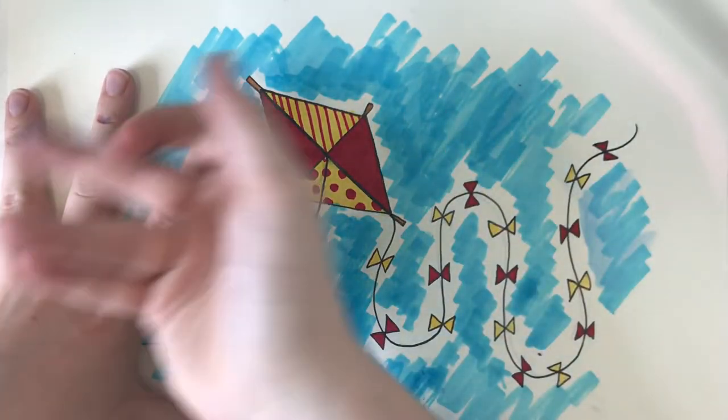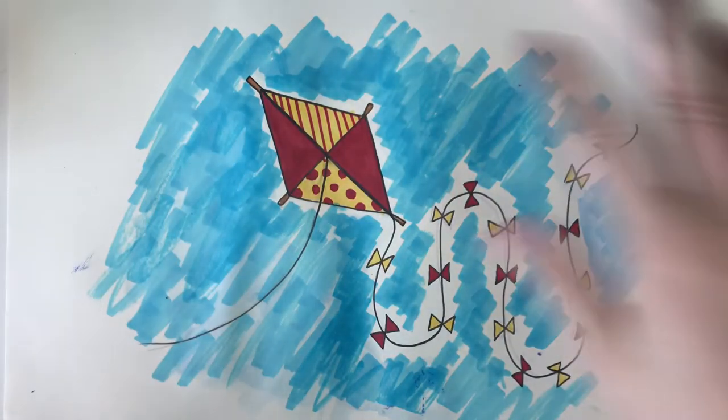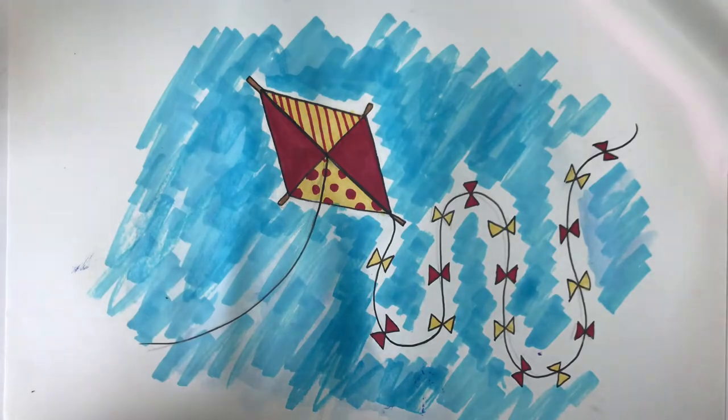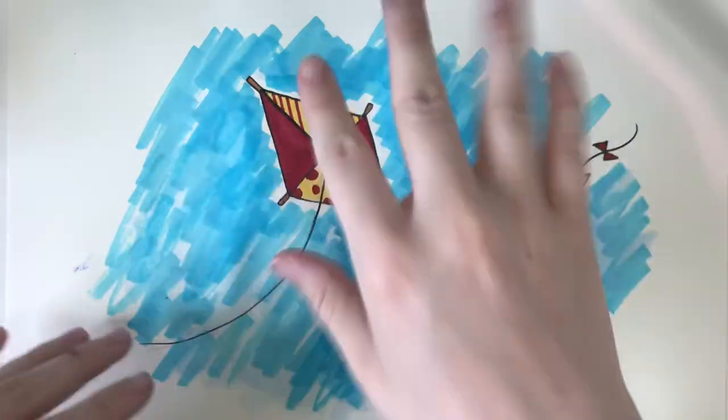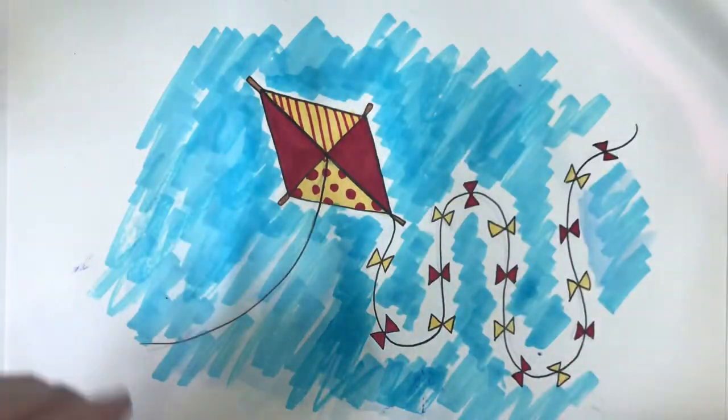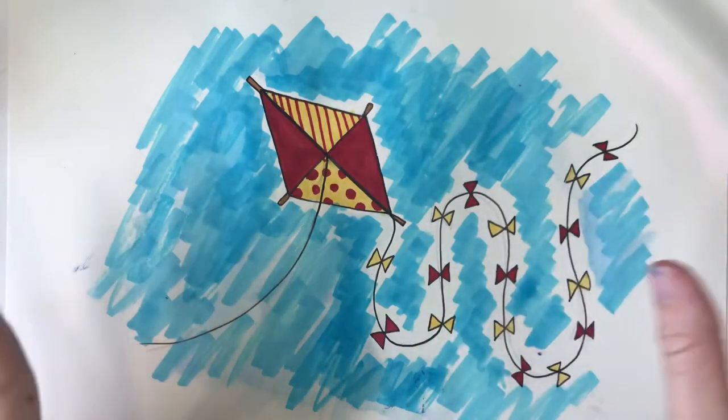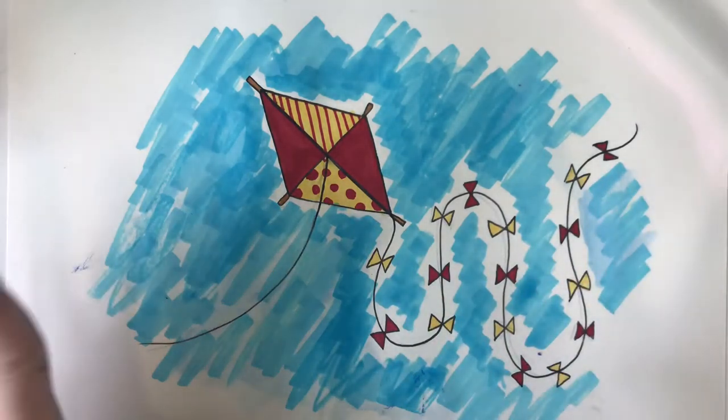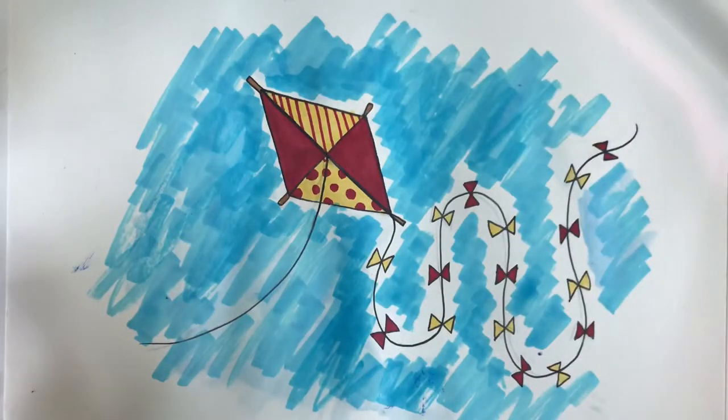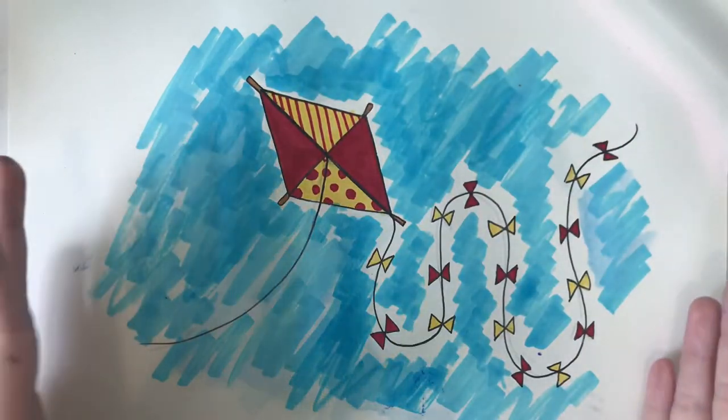Alright. So here is my finished product. I colored it and I also added, you know, scribbled a little bit of blue behind it so it looks a little bit like it's in the sky. But yeah, here is the finished kite.